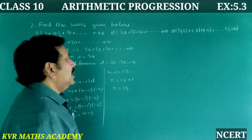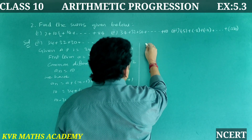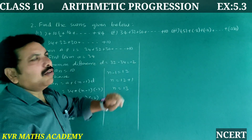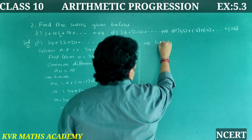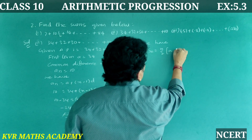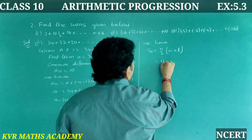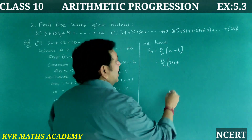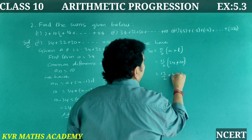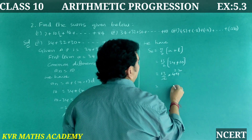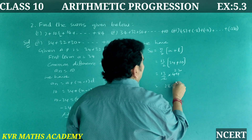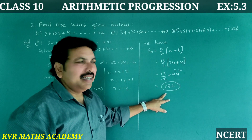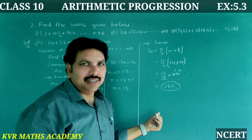With n = 13, a = 34, and last term L = 10, we use Sₙ = n/2 × (a + L) = 13/2 × (34 + 10) = 13/2 × 44 = 13 × 22 = 286. The sum of the AP 34, 32, 30, ..., 10 is 286.